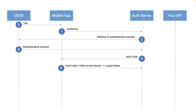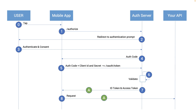After authentication, the user can consent to share specific data. After consent, the user is redirected to the app with an authorization grant. Then the client application makes a back-channel request to the authorization server with the authorization grant and some proof that this is a valid client. The backend validates that, and if all checks out, the authorization server responds with an access token.